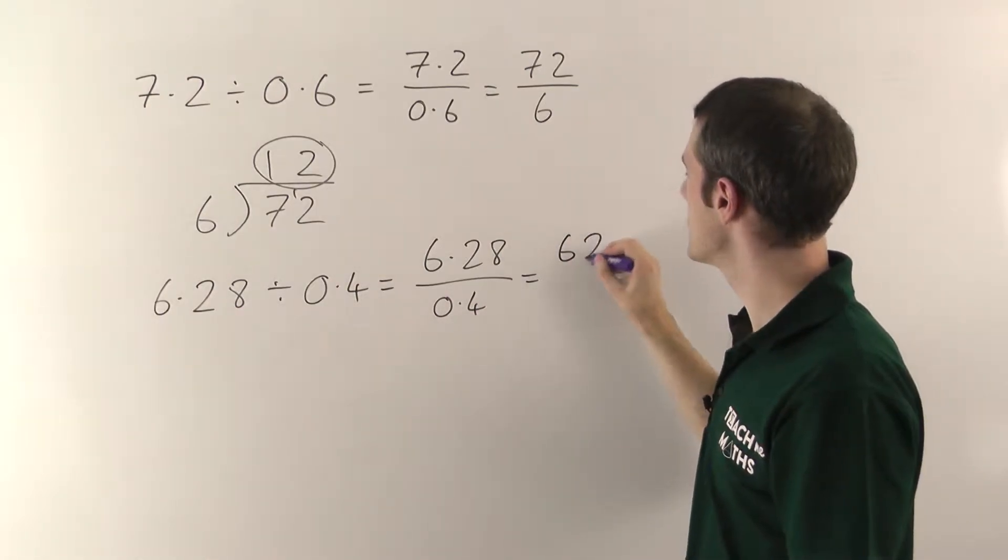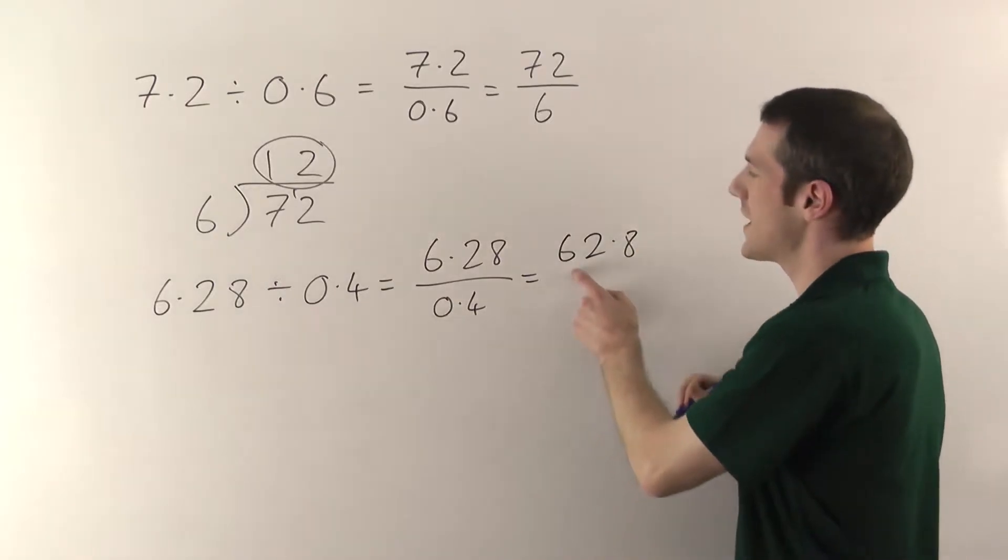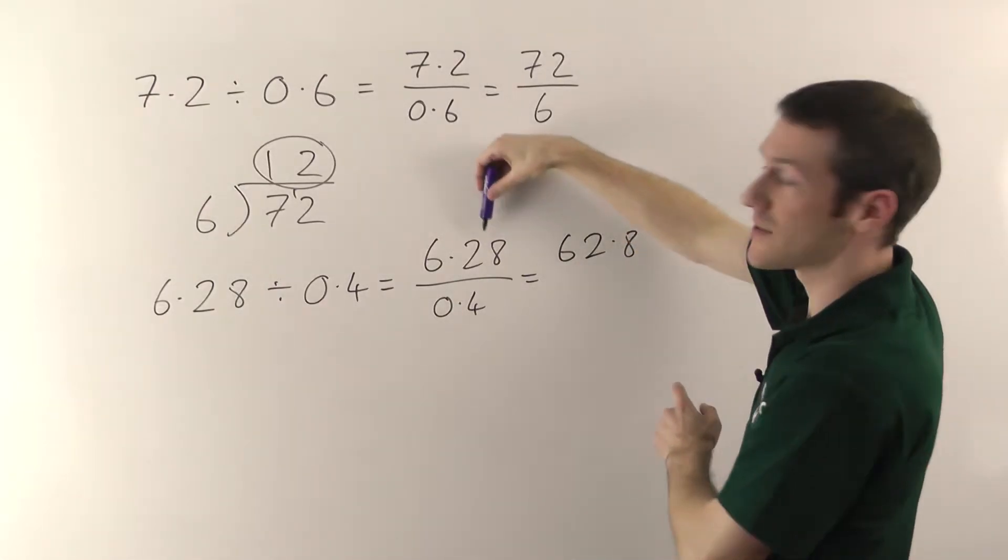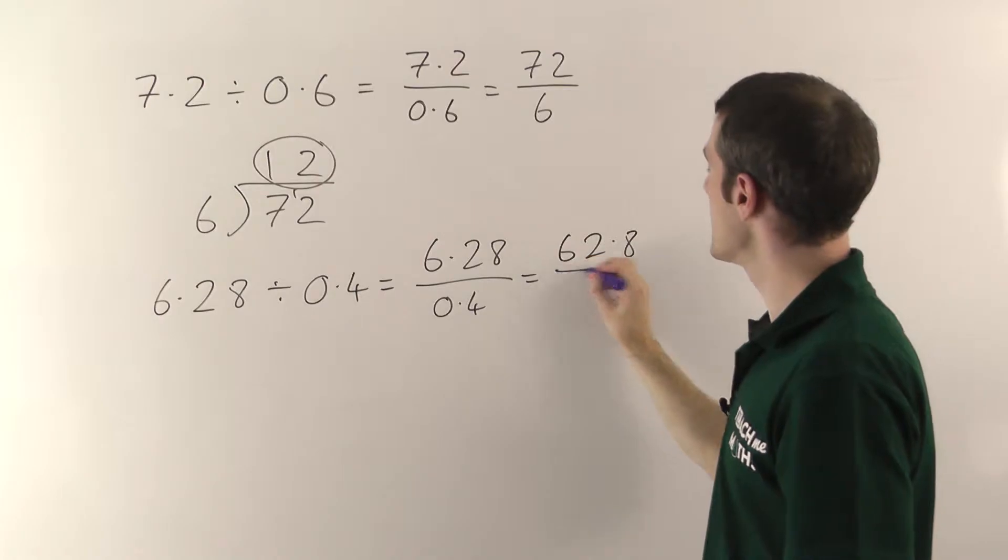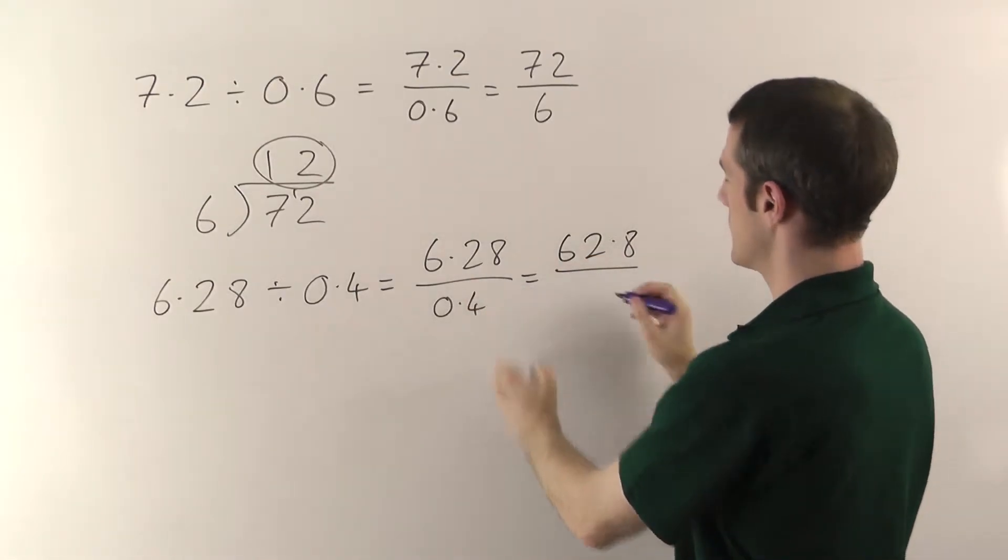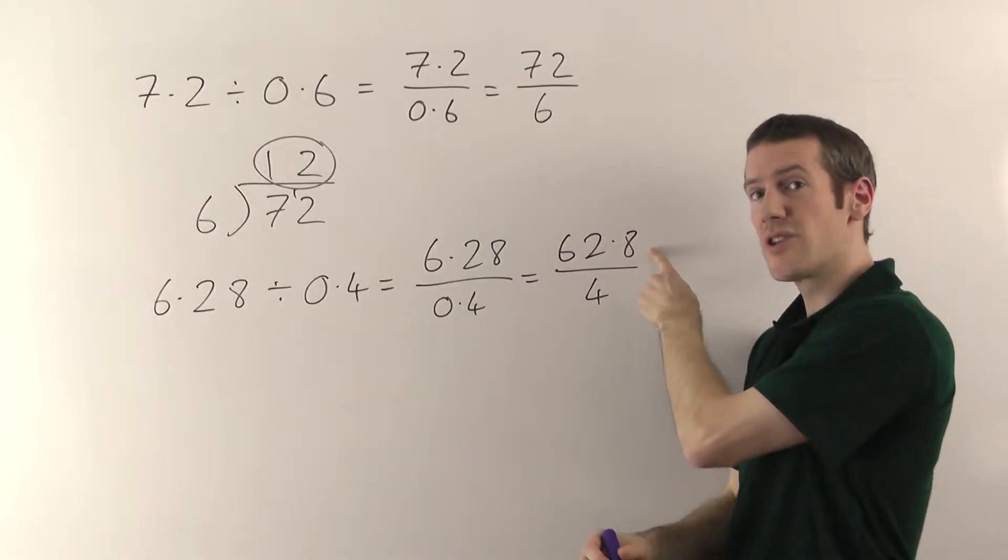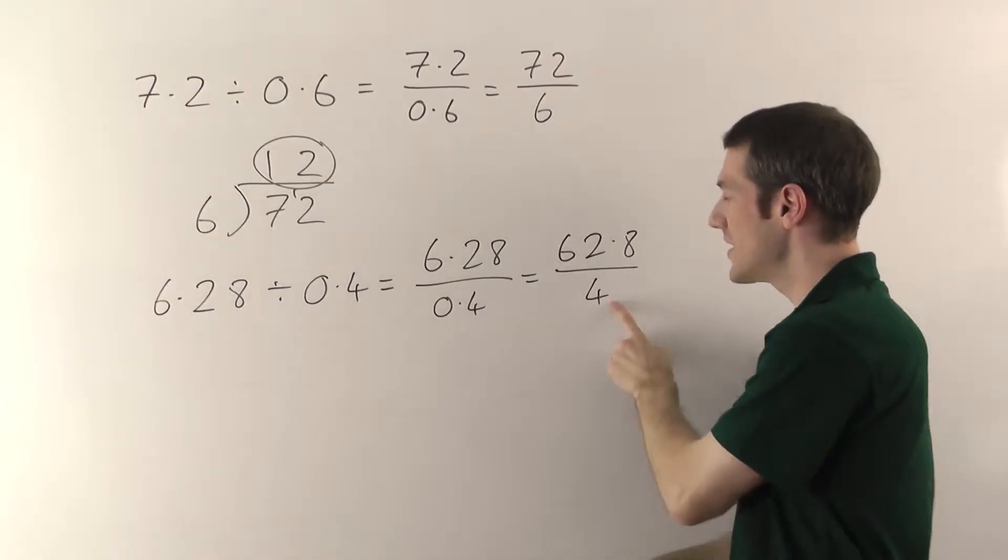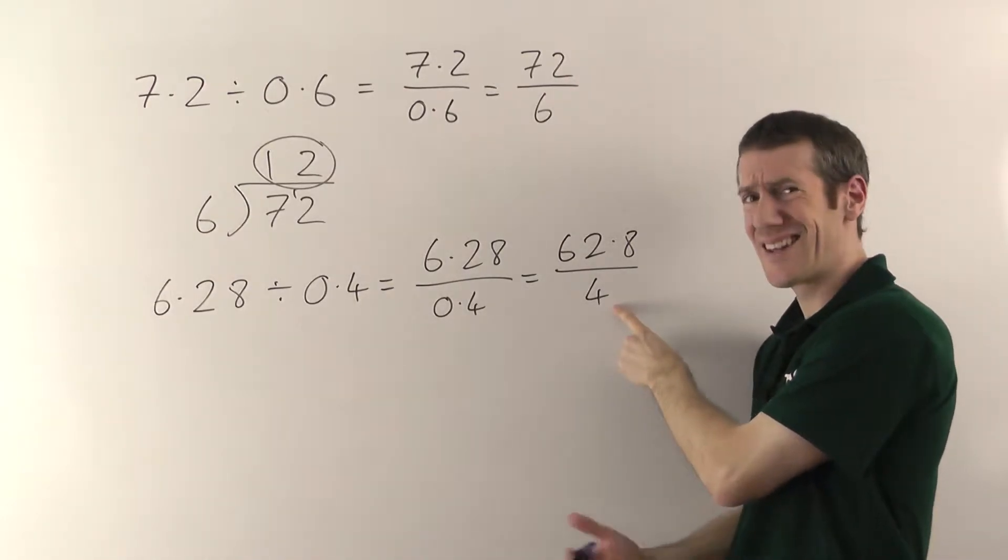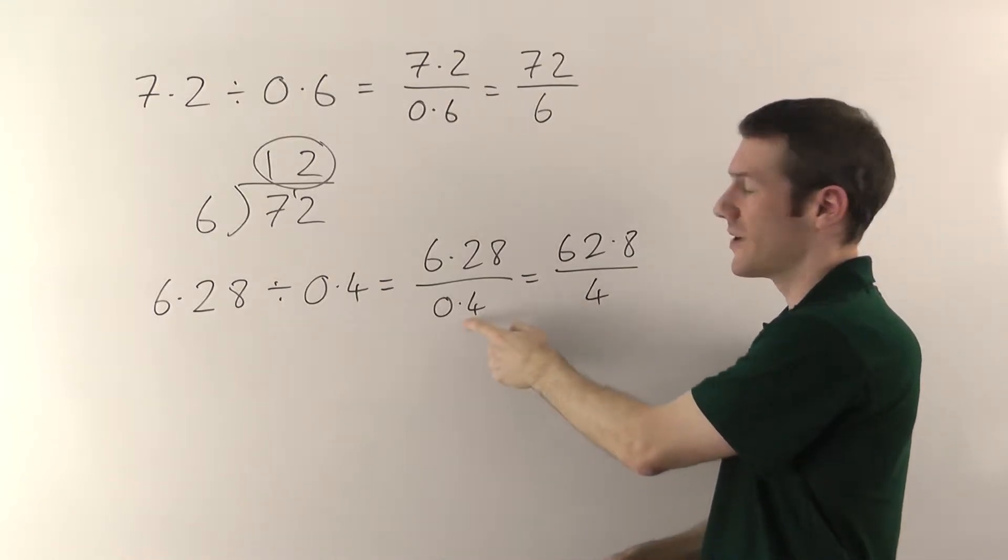So you're going to get 62.8 when you times the top by 10, decimal point just moves one place. Times the bottom by 10 moves it over the 4. Now we've got a whole number on the bottom. I don't have a whole number on the top, but that doesn't matter. You only need to have the whole number on the bottom. That's the thing that really causes problems, having the decimal number on the bottom.